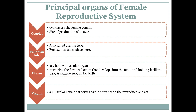Moving on to the next organ: fallopian tubes, also called uterine tubes. Like ovaries, we also have two fallopian tubes — right and left. Fallopian tubes are very important in the female reproductive system because the process of fertilization takes place here. Fertilization is basically the fusion of sperm and ovum.